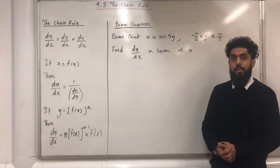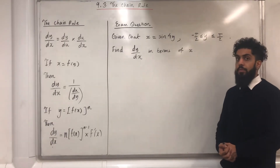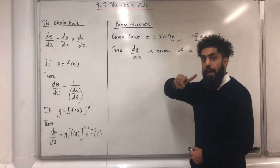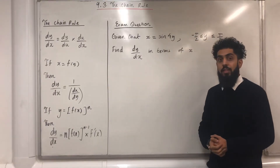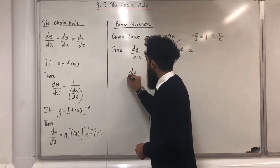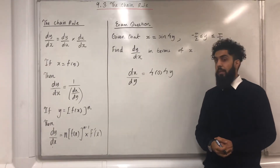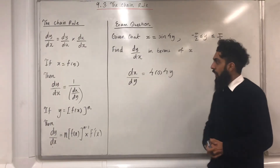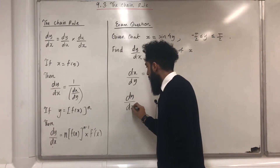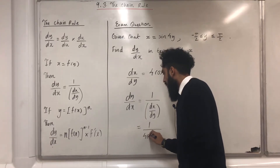Here is another exam question. Given that x equals sine 4y, where y is greater than or equal to minus pi over 2 and less than or equal to pi over 2, find dy over dx in terms of x. I've got x in terms of y, so I use the rule dy over dx equals 1 over dx over dy. First step: work out dx over dy, which equals 4 cos 4y. Therefore dy over dx equals 1 over 4 cos 4y.